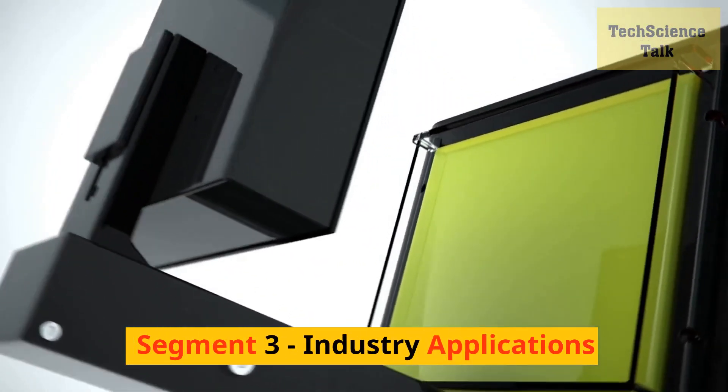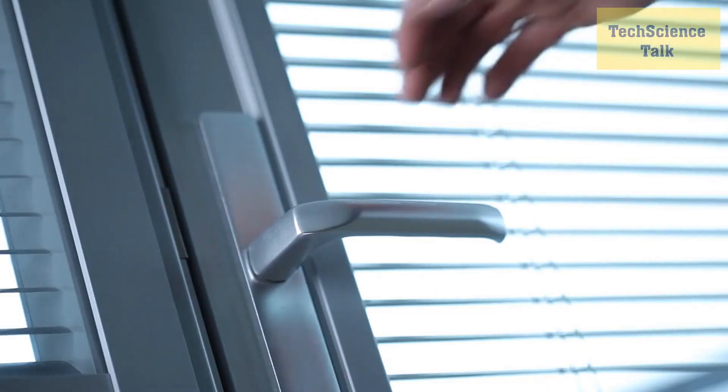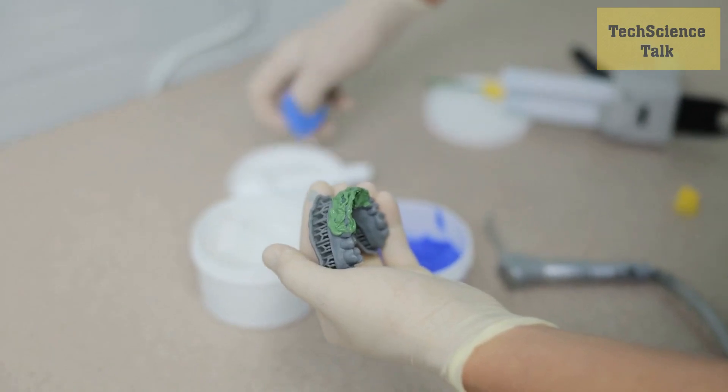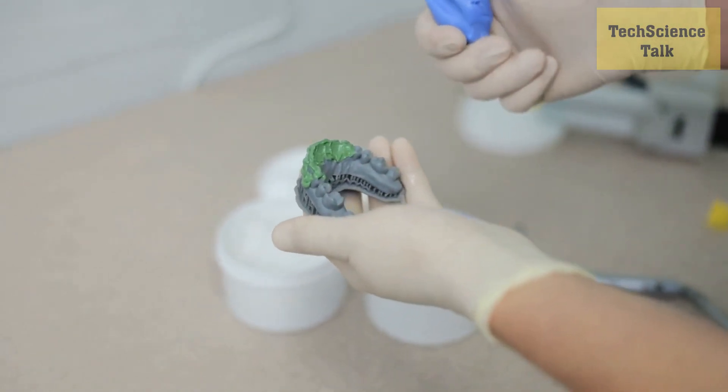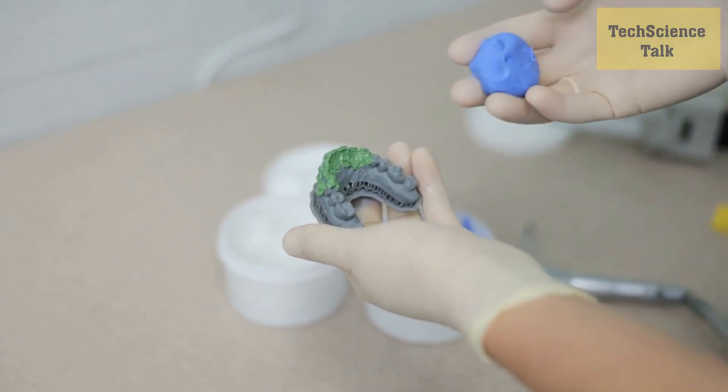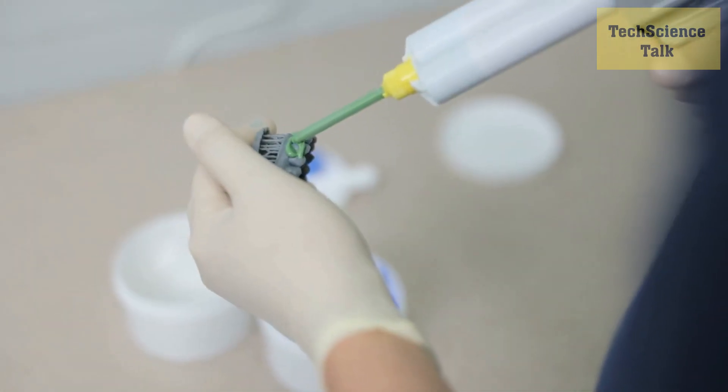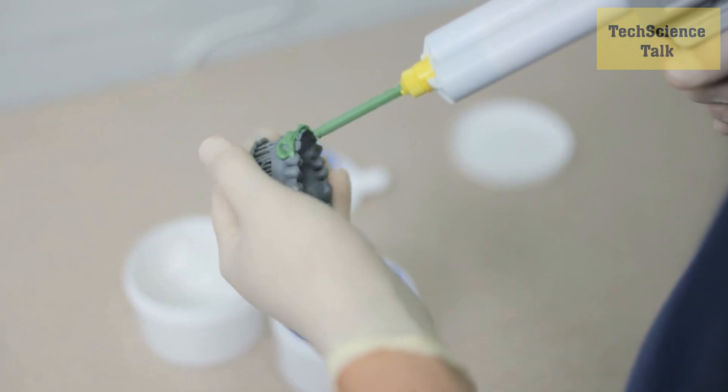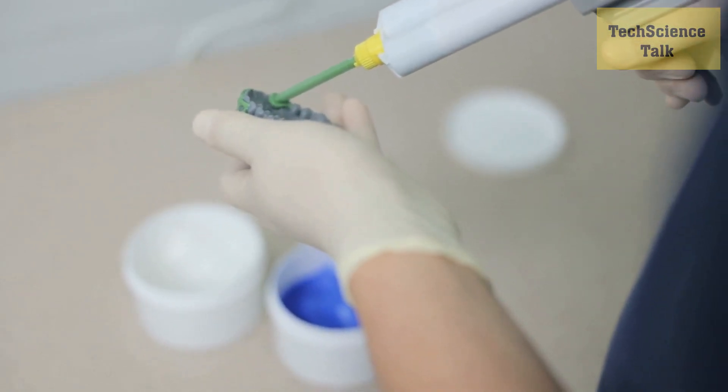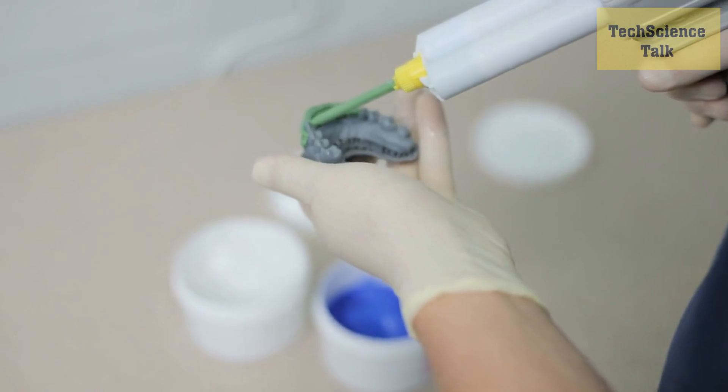Segment 3: Industry Applications. Finally, we'll look at some of the latest applications of 3D printing and additive manufacturing in various industries. In healthcare, 3D printing is being used to create customized implants and prosthetics, as well as to print living tissue for medical research. In aerospace, 3D printing is used to create complex parts with intricate geometries that would be impossible to make with traditional manufacturing methods.